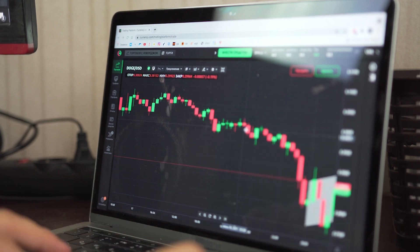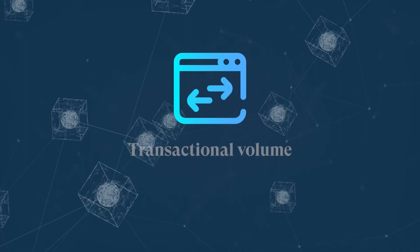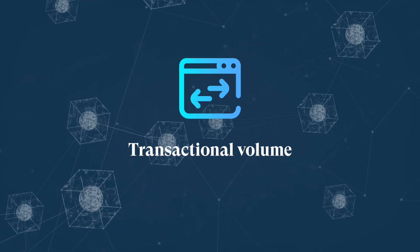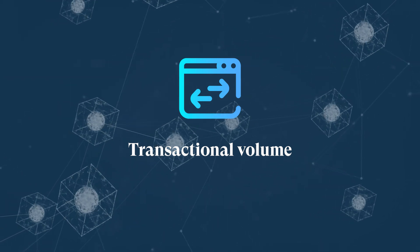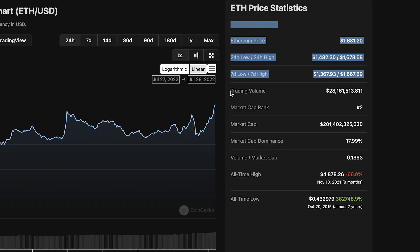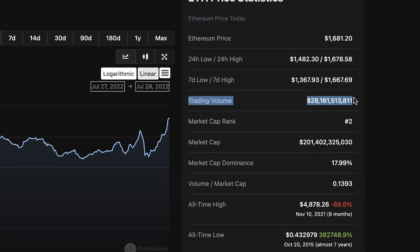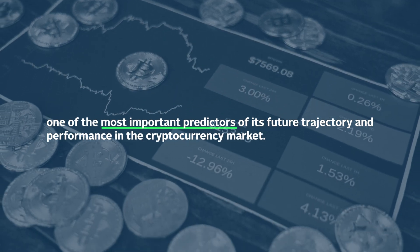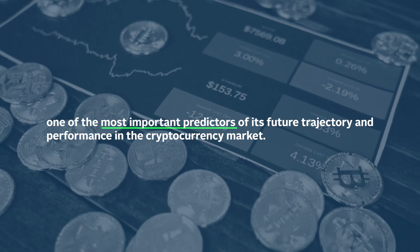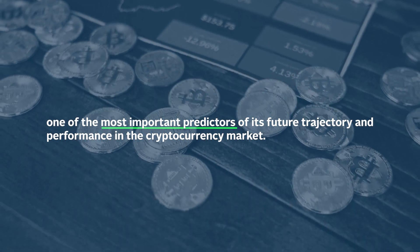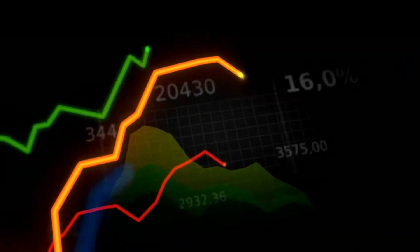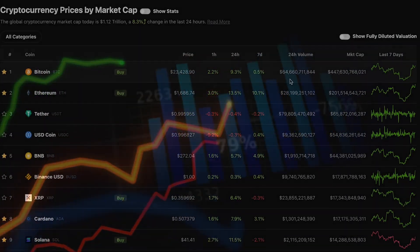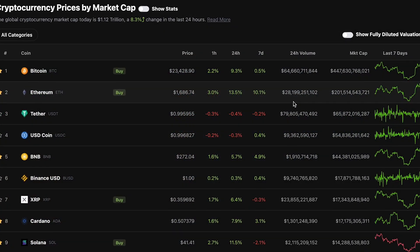The second metric is transactional volume, which represents the dollar amount of a cryptocurrency exchanged between addresses. Most traders consider a cryptocurrency's trading volume to be one of the most important predictors of its future trajectory and performance in the cryptocurrency market. Also, while all cryptocurrencies are volatile, large volume coins and assets tend to be less volatile.